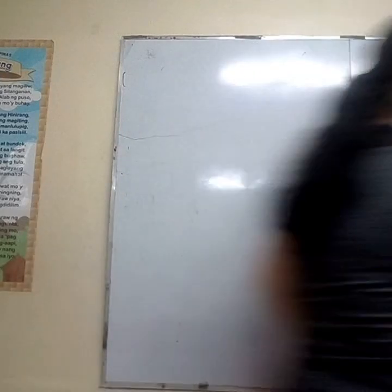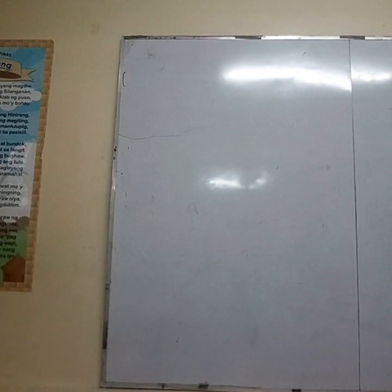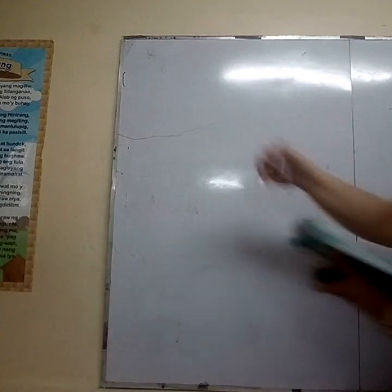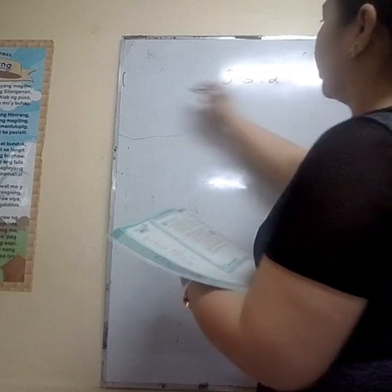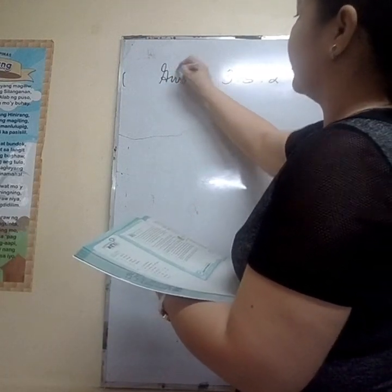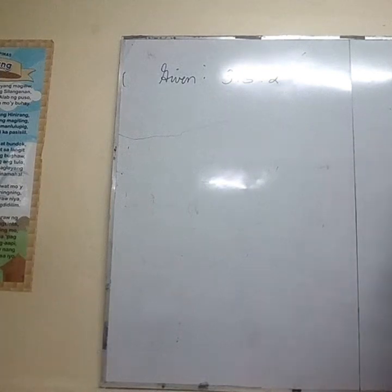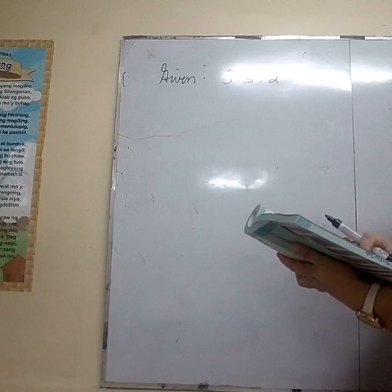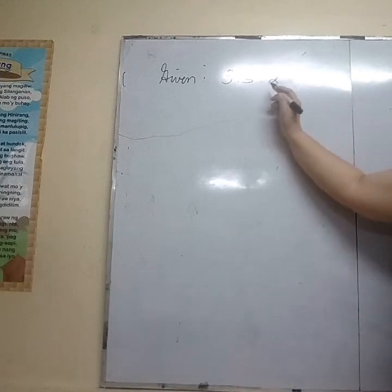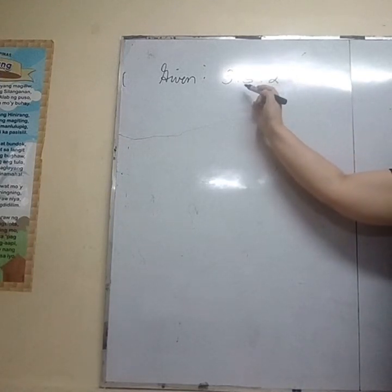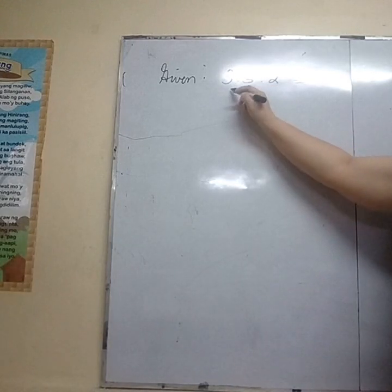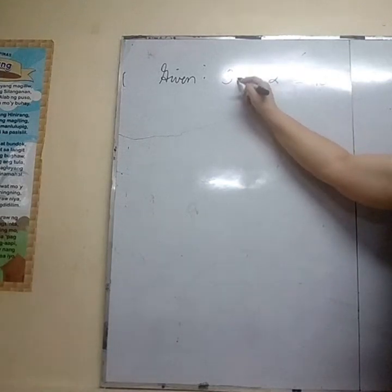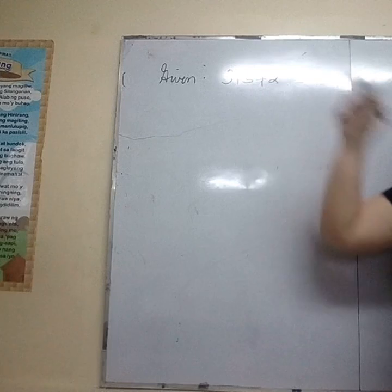Let's write the given first. The given is 3 is to 5 is to 2. Then the second step, you have to get the total. What is the total? 10 — because we added 3 plus 5 plus 2.